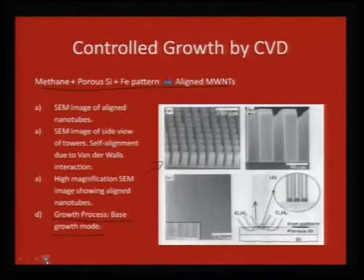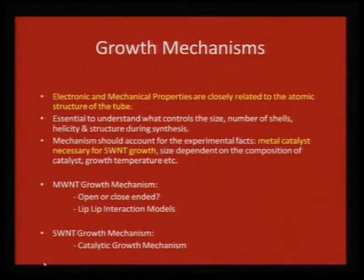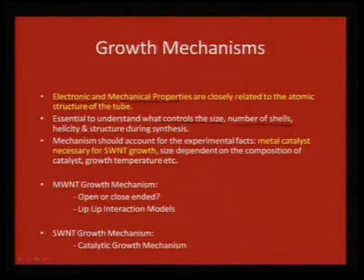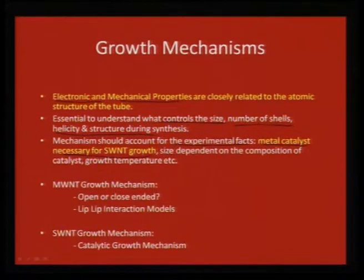If you do not pattern, you get a bunch or forest growing in one direction. The growth mechanisms are very important for understanding electronic and mechanical properties because both are dependent on the atomic structure of the tube. We need to understand what parameters control the size, number of shells for multi-wall tubes, helicity, and structure during synthesis. It has been established that you cannot grow a carbon nanotube without a metal catalyst, and the size dependency comes with the nature of catalyst and growth temperature.